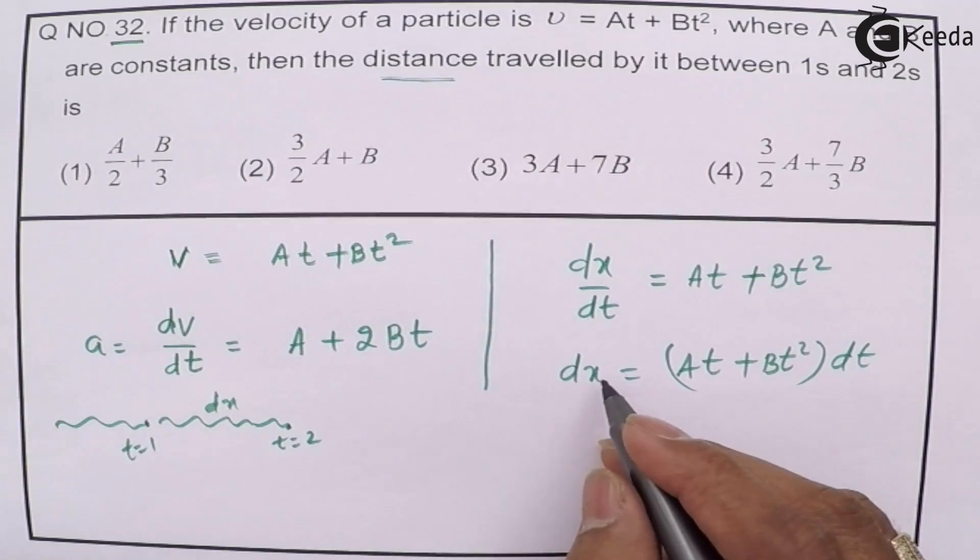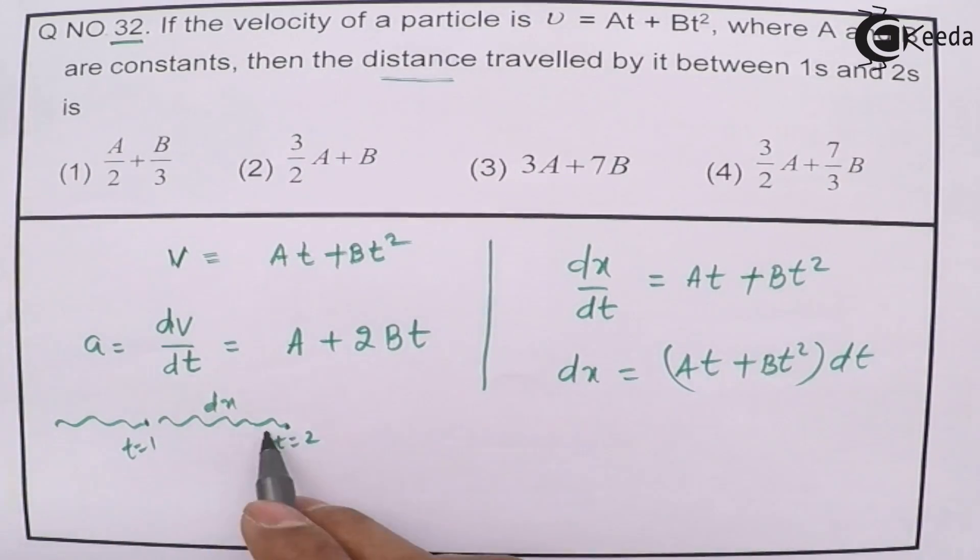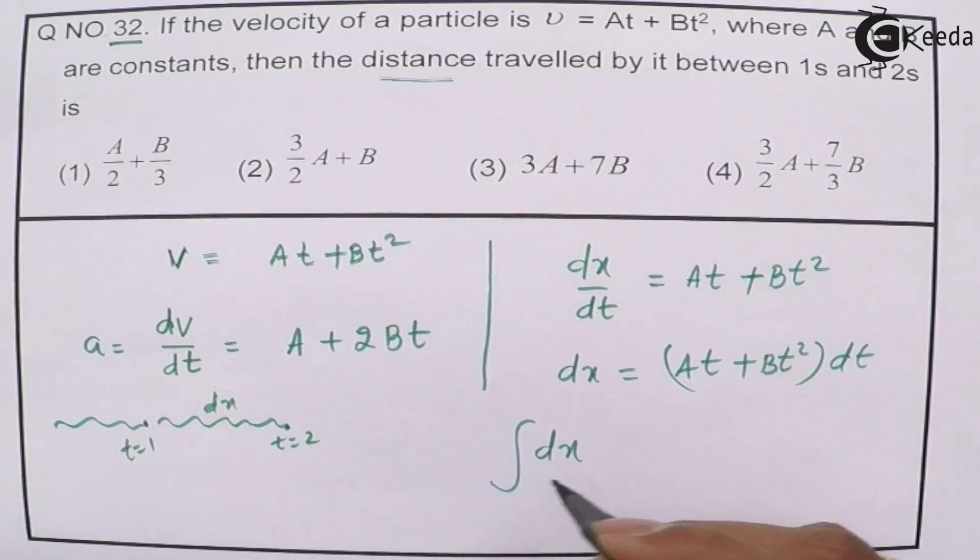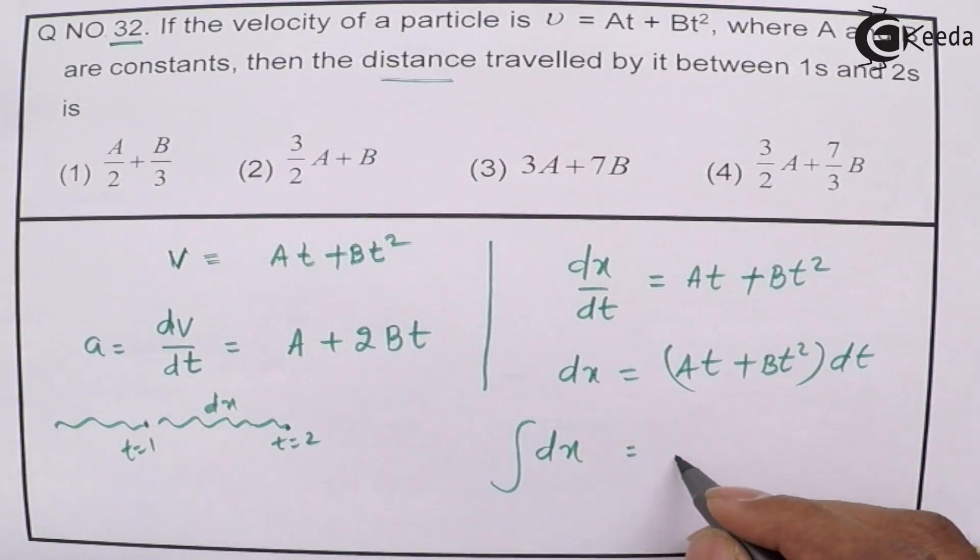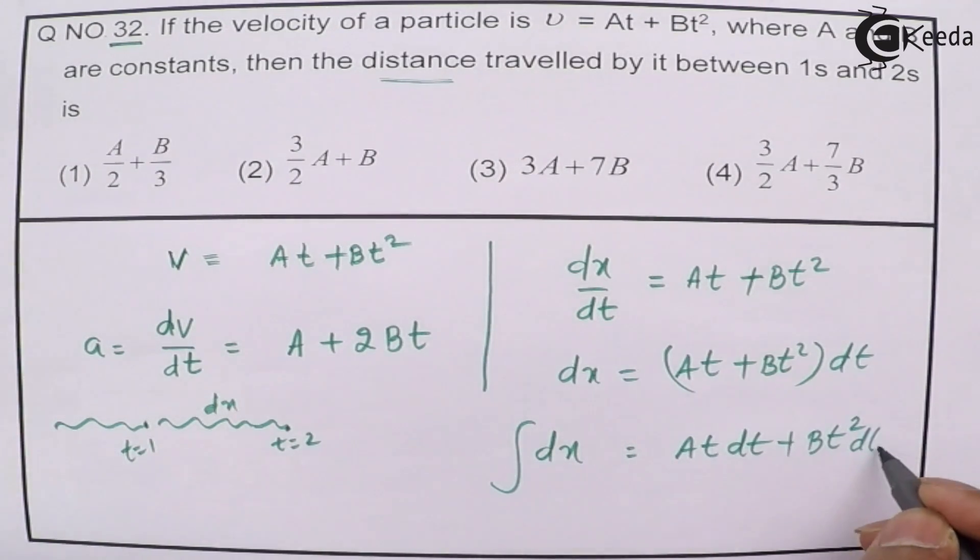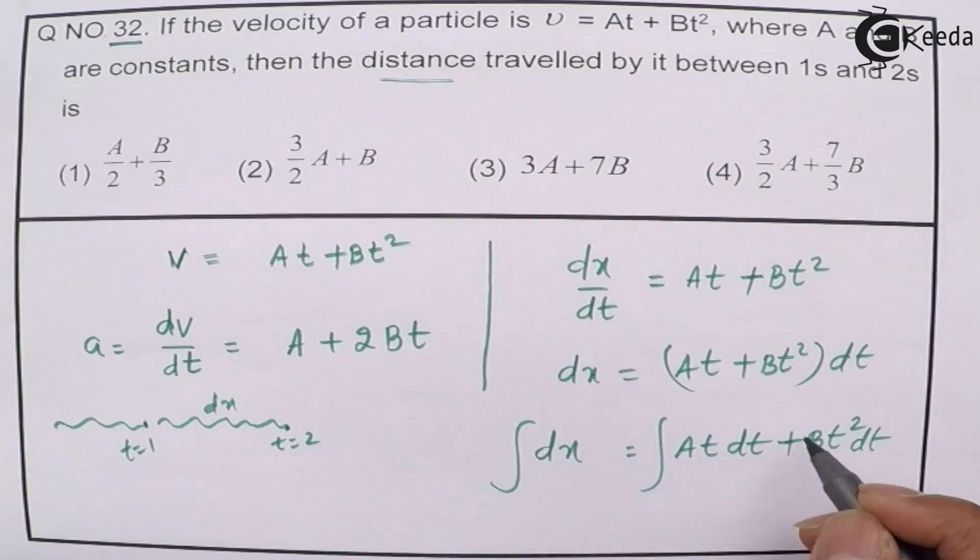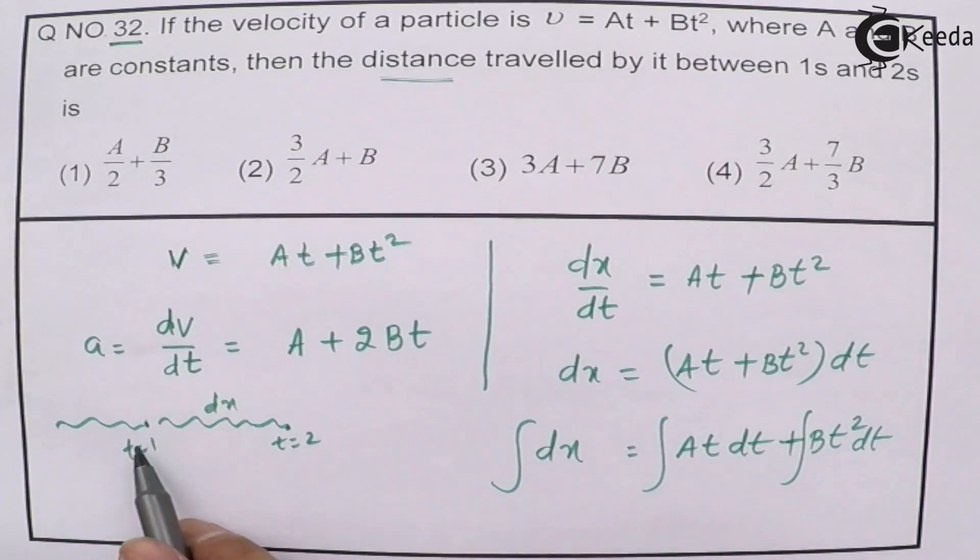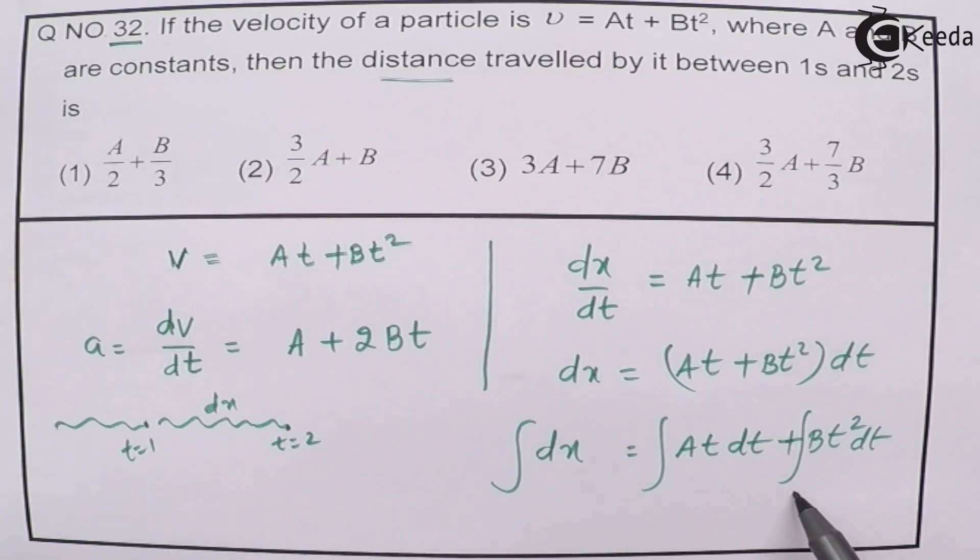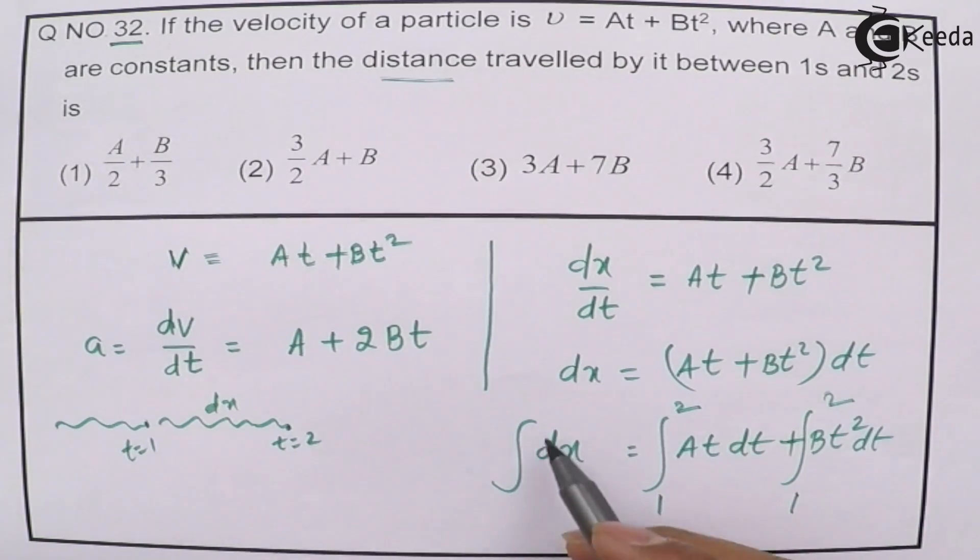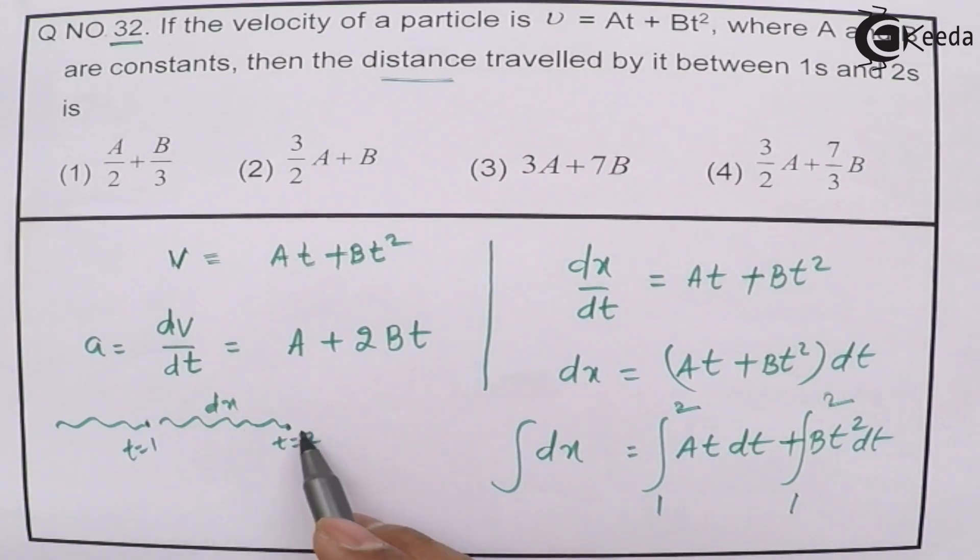I can get this dx by integration. Integrating both sides, we have integration of dx, which equals to AT dt plus BT square dt. The time interval is from 1 to 2, so here the limit will be 1 to 2, and here also the limit will be 1 to 2, and the dx is nothing but this distance traveled.